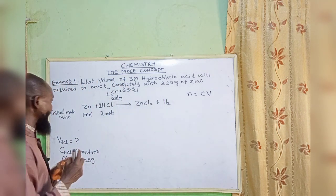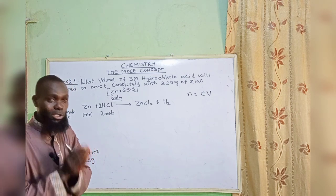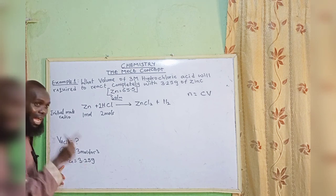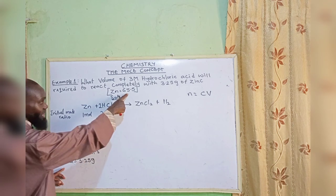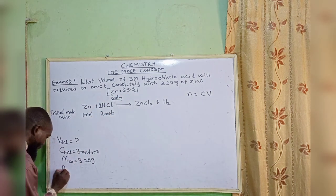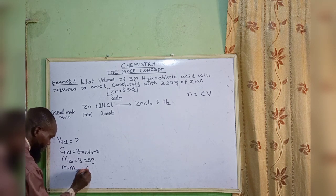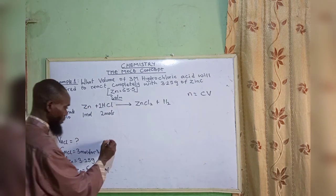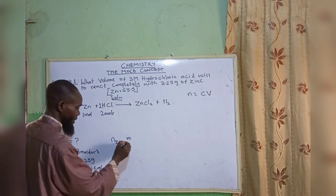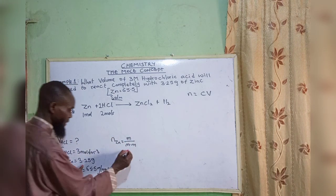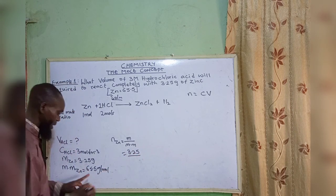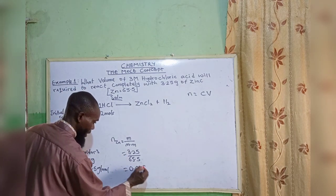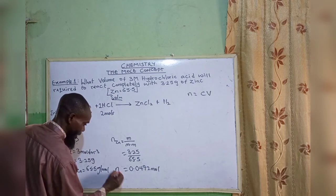How can we find our n? We can get n from the given information that is complete. The mass of zinc is 3.25 grams, and the molar mass of zinc is 65.5 grams per mole. So the amount of zinc equals mass over molar mass: 3.25 divided by 65.5, which gives 0.0492 mole.